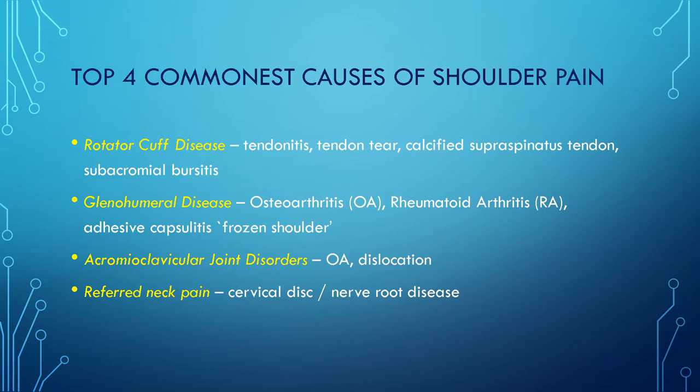Frozen shoulder is really a contracture of the capsule itself. Acromioclavicular joint disorders include osteoarthritis and dislocation of this joint. It's also very common to get cervical disc disease presenting as shoulder pain, so it's worth asking about neck pain and other neurological features.